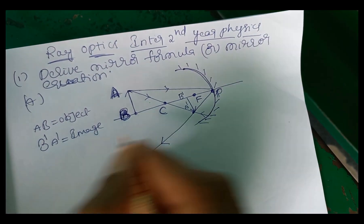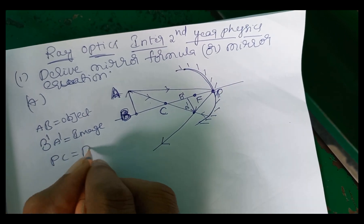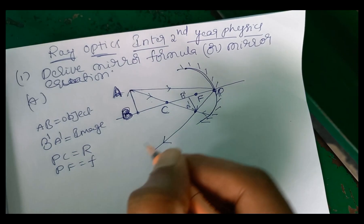So now from figure, PC is equals to radius, and PF is equals to focal length.